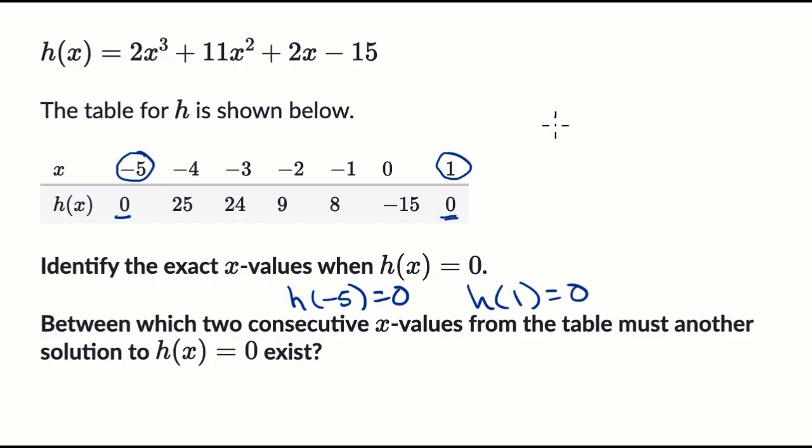One way to think about it: let's say this is a point here, some x-value. Let's call it x₁, where we have some curve h. I don't know what h actually looks like. You could have some point right here where h(x₁) = 0,